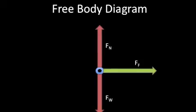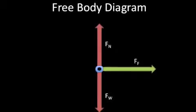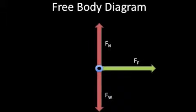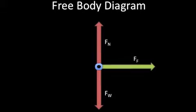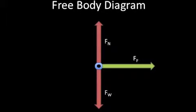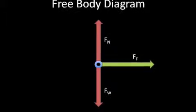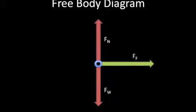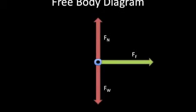Now let's talk about forces in action. This is an example of the free body diagram for the car. Fw is the force of gravity pulling the car to the ground. Fn, pointing up, is the normal force of the ground pushing back on the car. And Ff is the force of friction of the car's wheels against the ground.